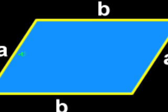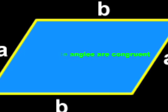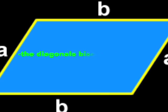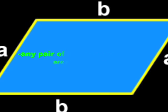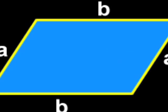The opposite sides are congruent, the opposite angles are congruent, the diagonals bisect each other, and any pair of consecutive angles are supplementary.